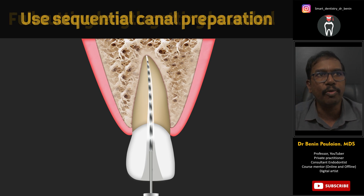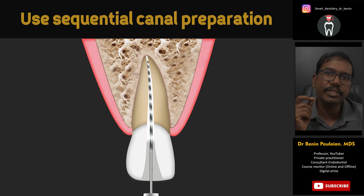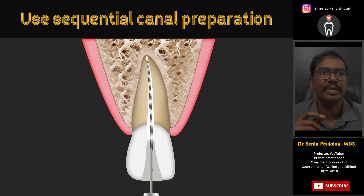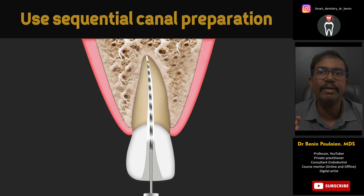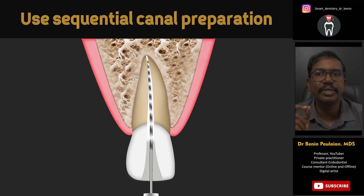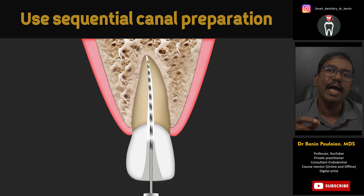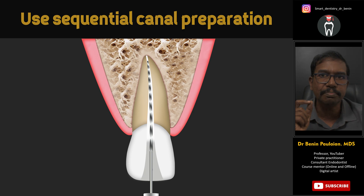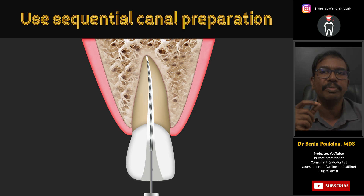To avoid this, we should always use a sequential canal preparation while doing canal negotiation or cleaning and shaping with a hand file. Hand files are never meant to be rotated inside the root canal, and rotating a hand file is one of the beginners' mistakes in fracturing endodontic files — and that should be avoided at any cost.